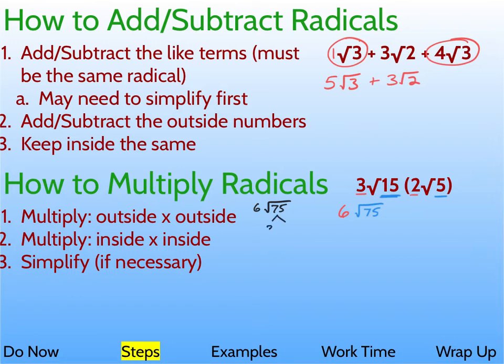75 is 3 times 25. 25 is 5 times 5. Oh, look, we have a pair here. These 5s are a pair. So we can actually bring the 5 out front. And it'll join the 6 that's already there. And then, what's left on the inside is this 3 that we never got to pair up. So then, you do 5 times 6 is 30 radical 3. And that's your final answer right there.